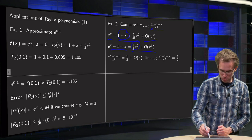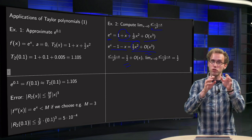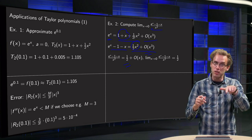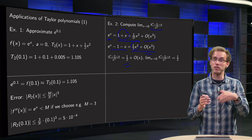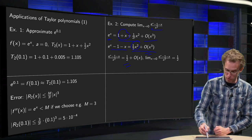then the 1 half x squared becomes 1 half, and the order x cubed, well, that means terms x cubed, x to the power 4, x to the power 5. If you divide by x squared, you get terms of order x plus x squared, etc, so of order x.